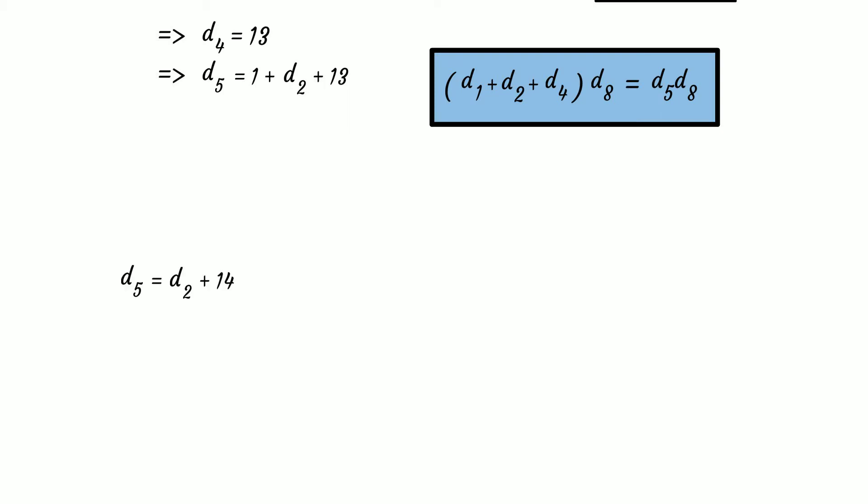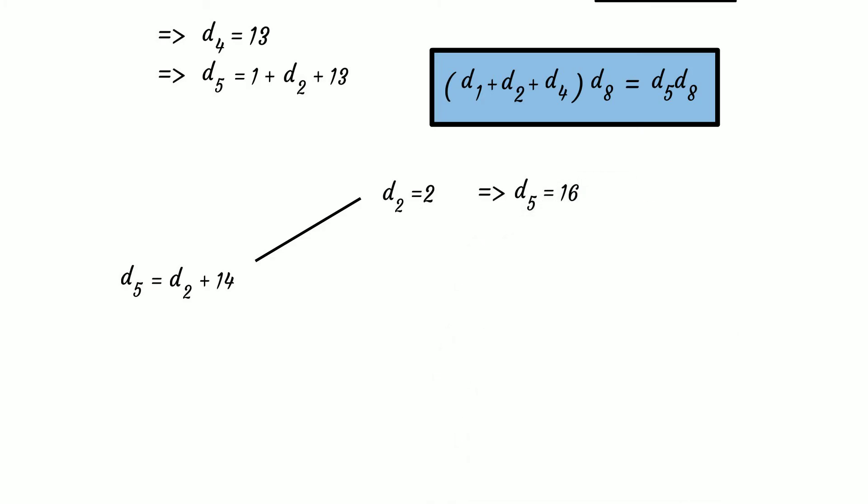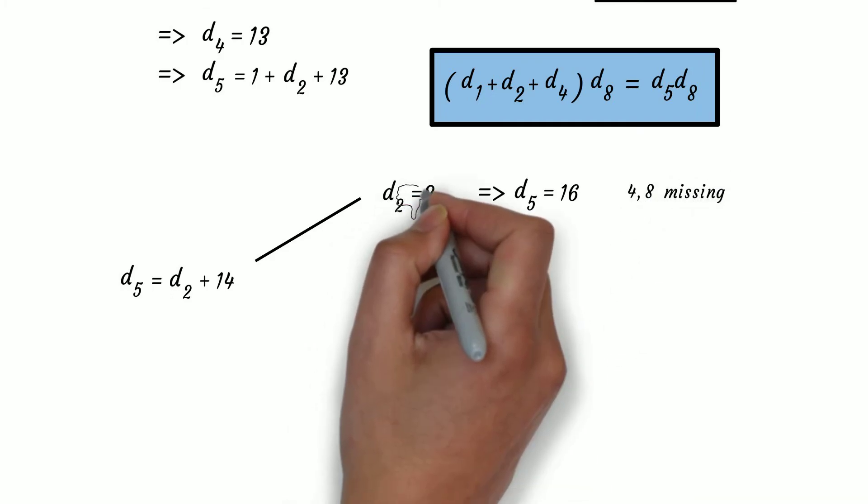So d5 = 14 + d2. Now let's observe d2. If d2 is composite, its factors would also be divisors of n with index less than 2, but the only divisor with index less than 2 is 1. Therefore d2 must be prime. Now checking case d2 = 2: d5 = 16. But indices 4 and 8 would be missing in the sequence below index 5, so d2 = 2 is not possible.